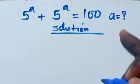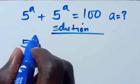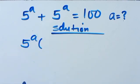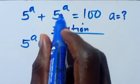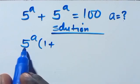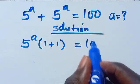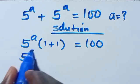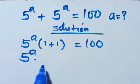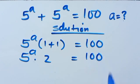From here we have 5 to the power of a in common, so we can factor it out. We open the bracket: 5^a divided by 5^a gives us 1, plus 5^a divided by 5^a gives us 1, equals 100. So we have 5 to the power of a times (1 plus 1), which gives us 2, and this equals 100.